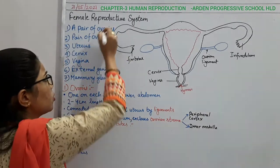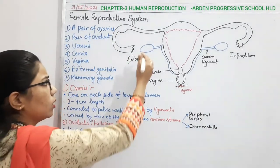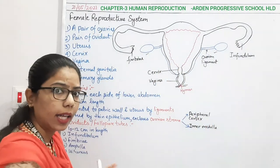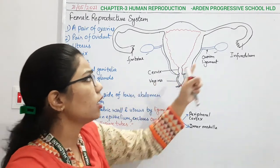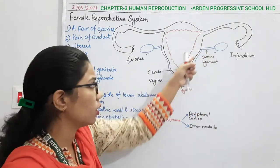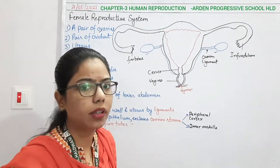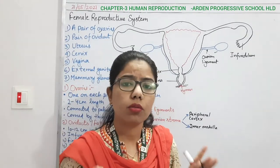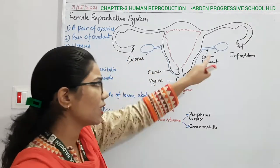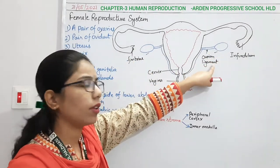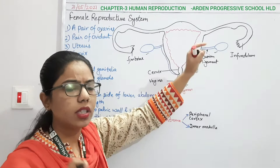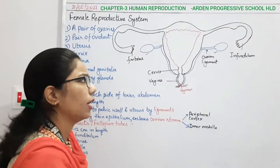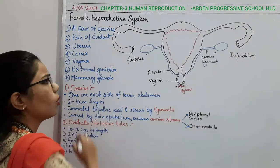Let's start with the first one — the ovary. This is the pair of ovaries, and these ovaries are connected to the uterus region as well as the pelvic region, because the reproductive system is situated in the pelvic region. The ovaries are connected to the uterus by the ovarian ligament, which connects the ovary with the uterus part.